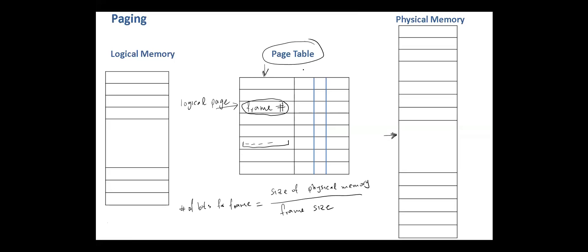Page tables have additional optional entries and they are usually called status bits. Today we are going to discuss these bits, and most of them will be used in describing the next chapter on virtual memory.